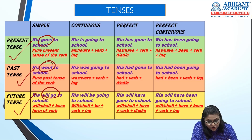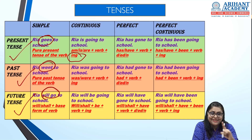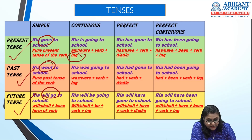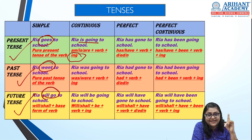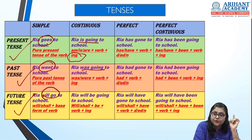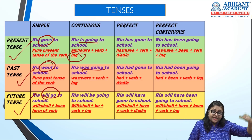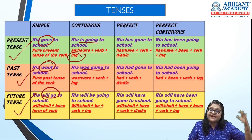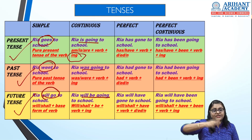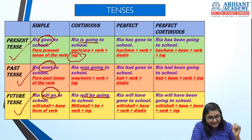For continuous tenses, you need '-ing' plus a helping verb. The helping verbs are: is, am, are, was, were. Present continuous: 'Ria is going to school' — action happening now. Past continuous: 'Ria was going to school' — action was going on in the past. Future continuous: 'Ria will be going to school' — action expected to be ongoing in future. So along with '-ing', you also need a helping verb.